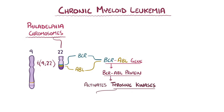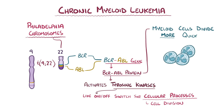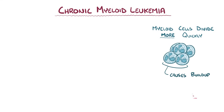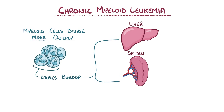Some of these tyrosine kinases are like on-off switches for various cellular functions, including cell division. So when the BCR-ABL fusion protein turns on these tyrosine kinases, it forces myeloid cells to keep dividing quicker than they should, which causes a buildup of premature leukocytes in the bone marrow that eventually spill into the blood. The premature leukocytes then move to the liver and spleen, causing swelling of those organs or hepatosplenomegaly.